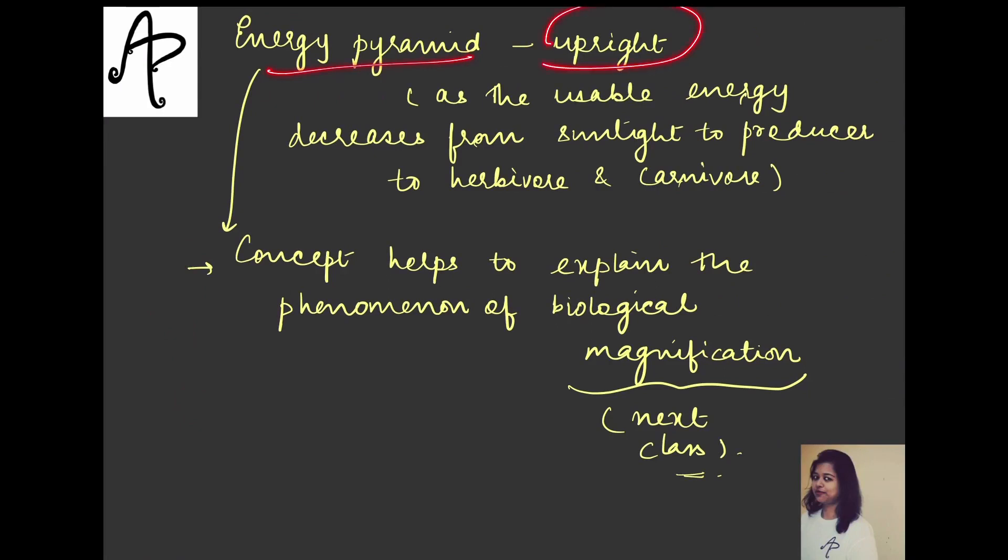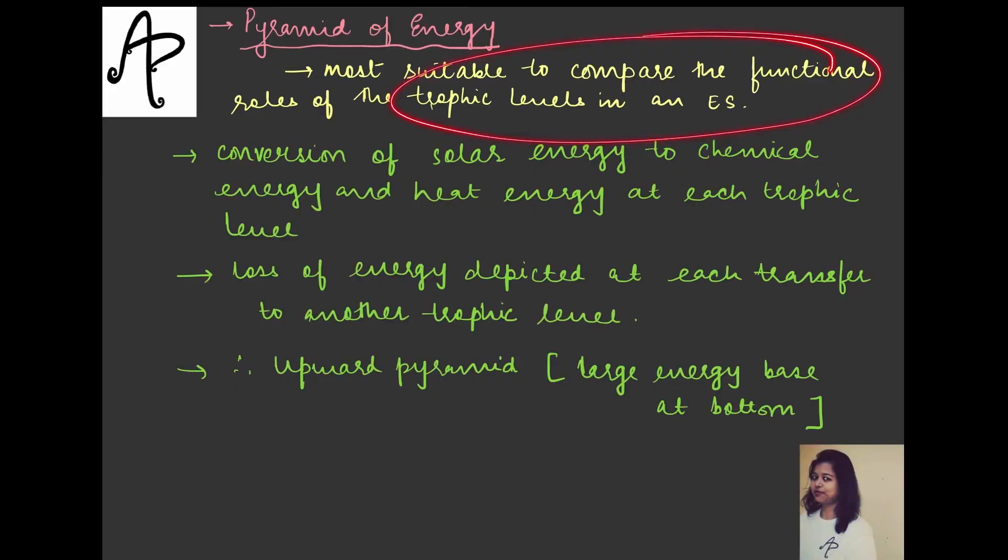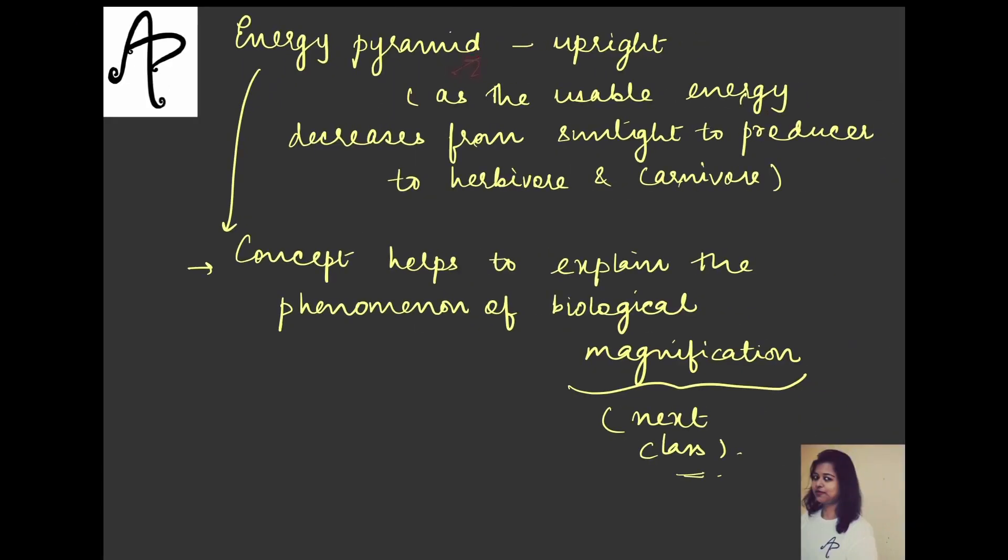Therefore because with each level the energy has to decrease, there is no other substitute for that, the energy pyramid is also always upright because the usable energy will always be decreasing from sunlight to the producer to the herbivore and then to the carnivore. Now this concept of energy pyramid, apart from that functional role and helps to compare, another significance of this energy pyramid is that it helps to explain the phenomena of biological magnification. Now what is this we will see when we do the next topic when we talk about the pollutants. So biological accumulation and magnification. Just for the time being remember that this helps us to understand this. And see therefore because each topic is interlinked with the coming topic or the previous one, you really need to watch all the videos in a sequence for that matter. So thank you so much guys, see you in the next class. Bye bye, take care till then.